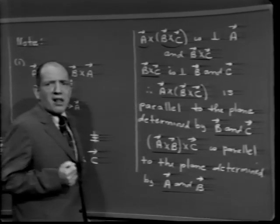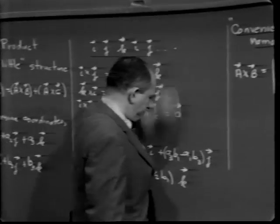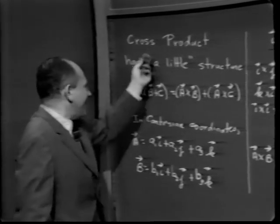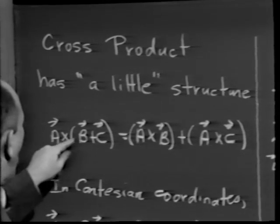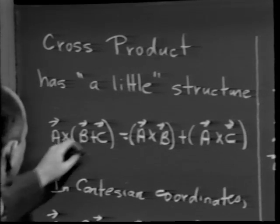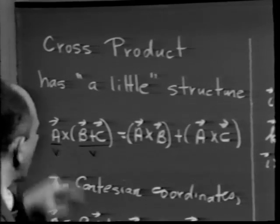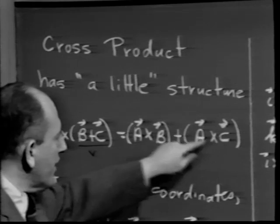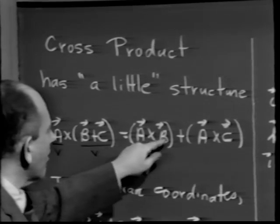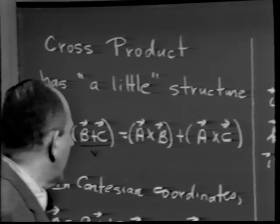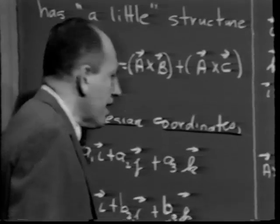Before criticizing the cross product too much, let me point out that certain properties we like in arithmetic are present. The distributive property holds for the cross product. If vector a is crossed with the sum of vectors b and c, then a×(b+c) = a×b + a×c. That's a very nice structural property.